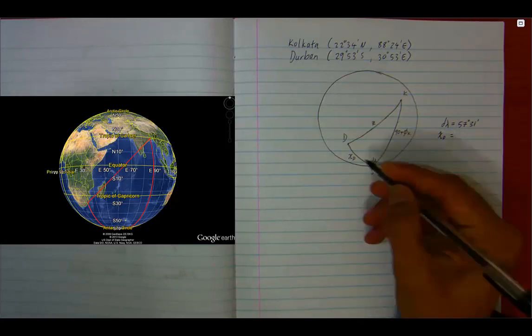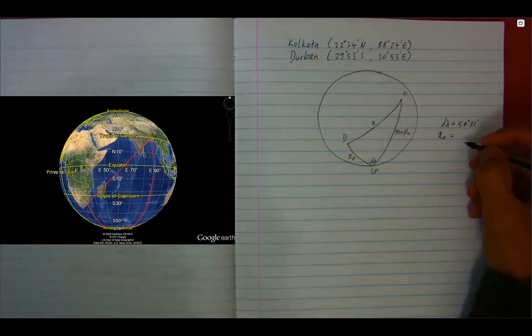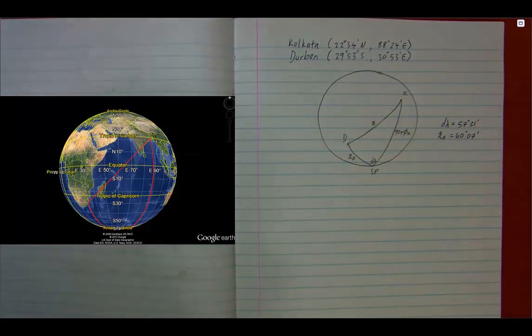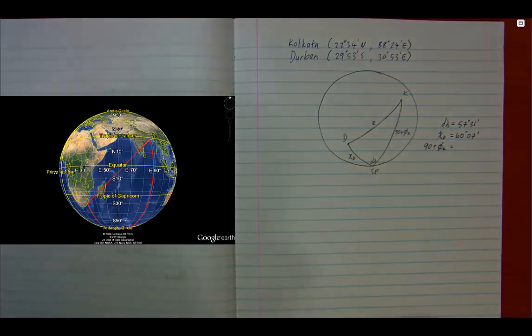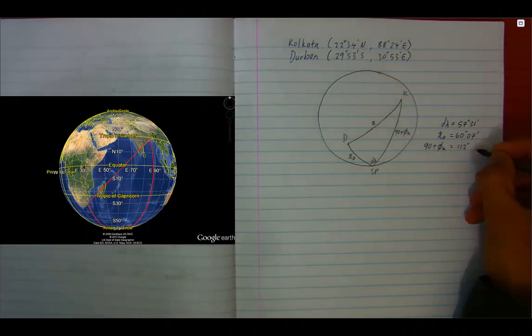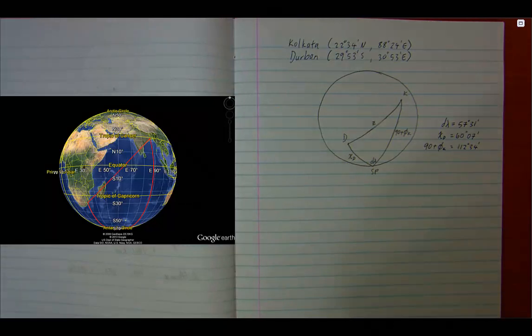Chi of Durban, which is the co-latitude of Durban, is equal to 90 minus phi of Durban, which works out to 60 degrees, 7 minutes. And 90 plus phi of Kolkata works out to be 112 degrees, 34 minutes.